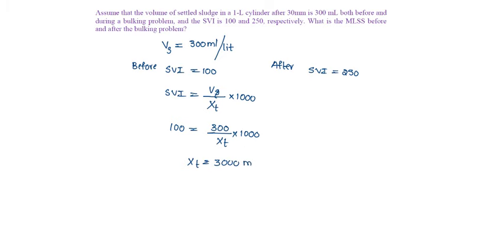mg per liter before bulking. After bulking, 250 = (300/xt) × 1000, and xt = 1200 mg per liter after bulking.